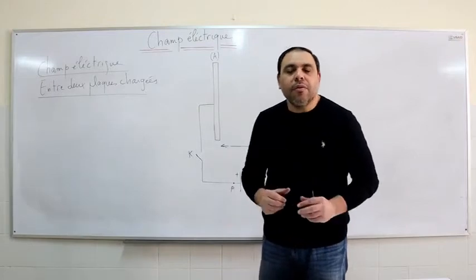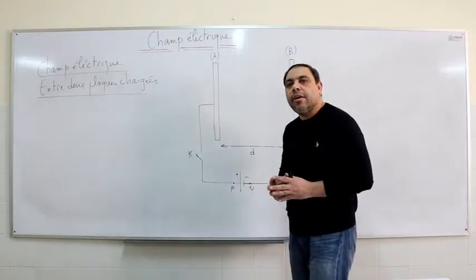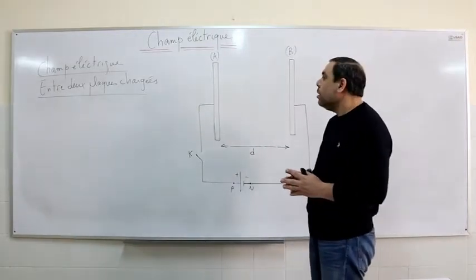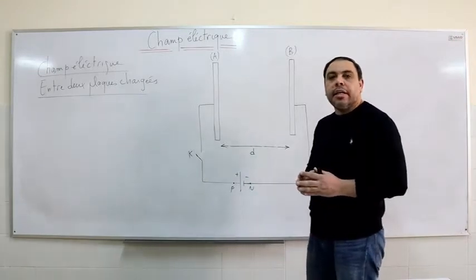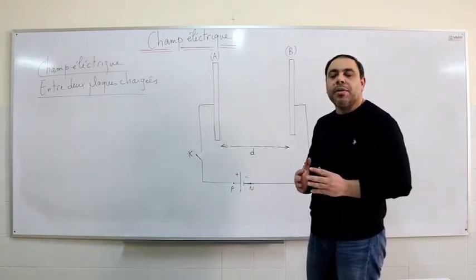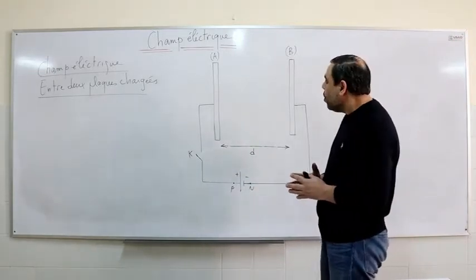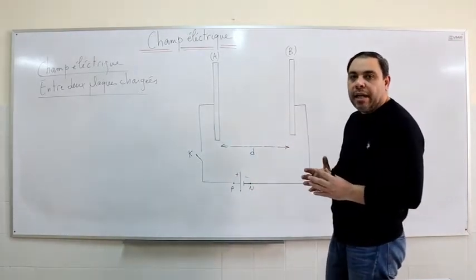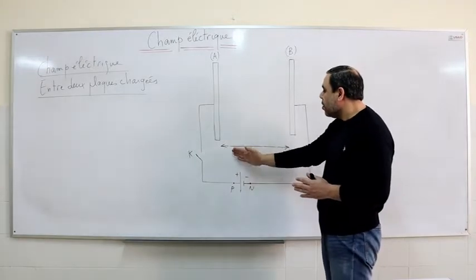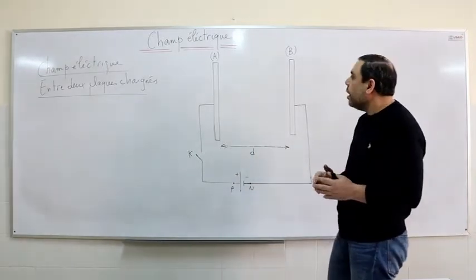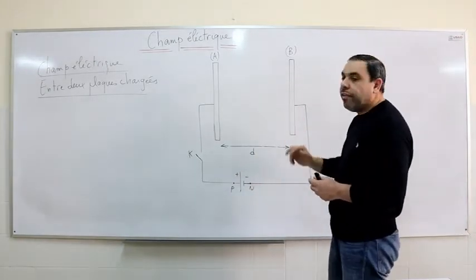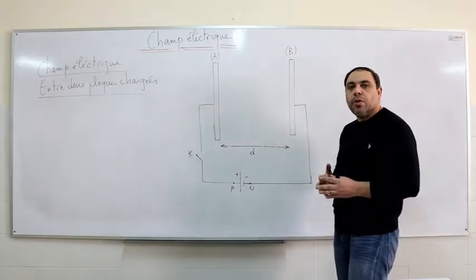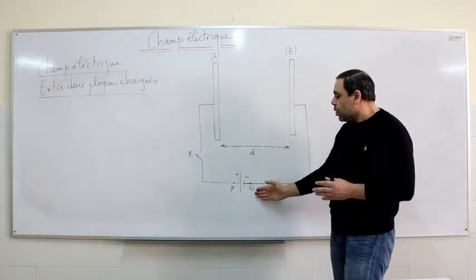Electric Field Part 4. Today we're going to study the electric field between two charged plates separated by a certain distance. A and B are two plane conducting plates separated by a distance D. The plates are subjected to a voltage supplied by a generator.